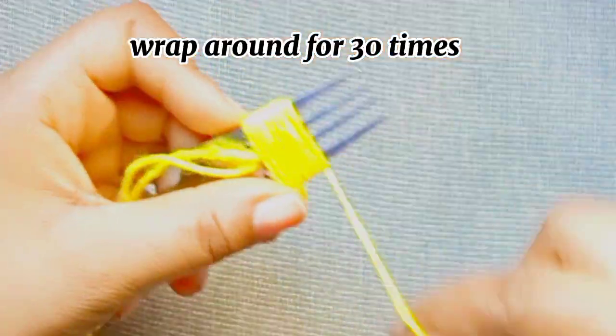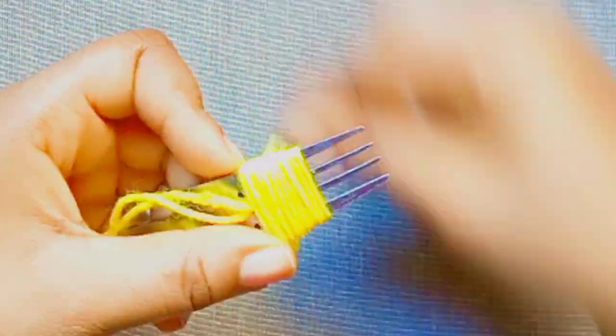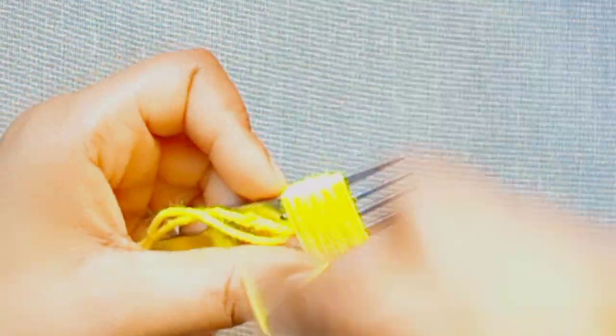Now get the fork. Put two strands of wool right at the middle of the fork, then wrap around the first color of wool on the fork for 30 times.